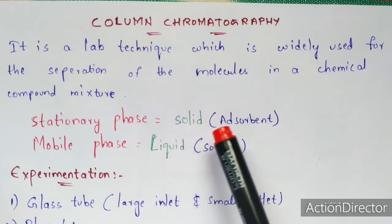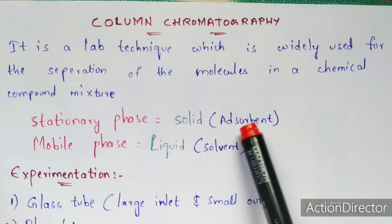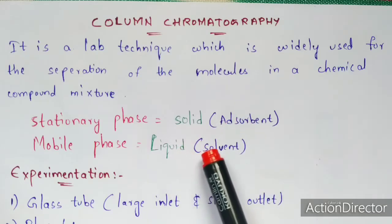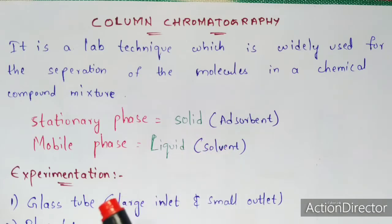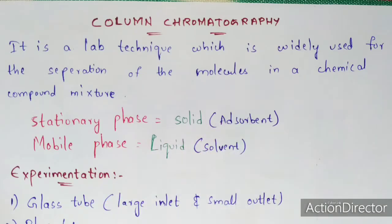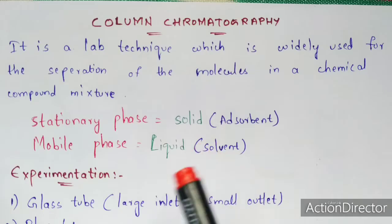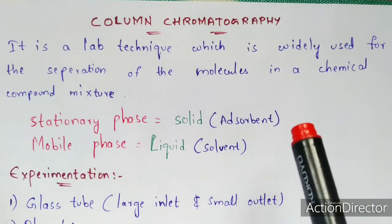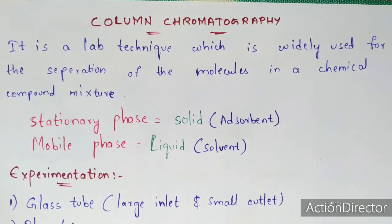In column chromatography, the stationary phase is an adsorbent and the mobile phase is a solvent. Now let us look at the apparatus required for this technique.